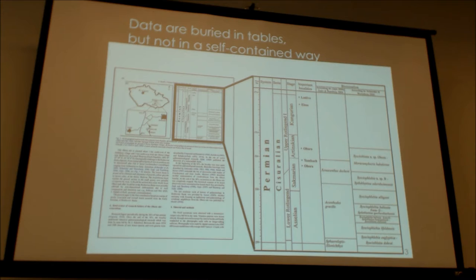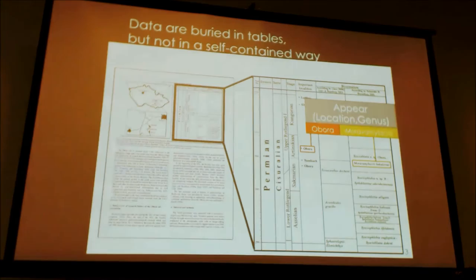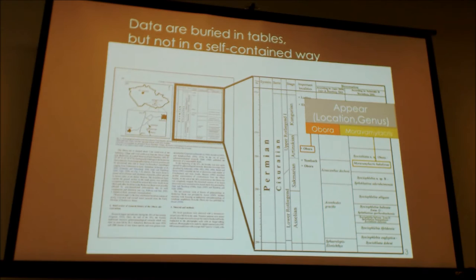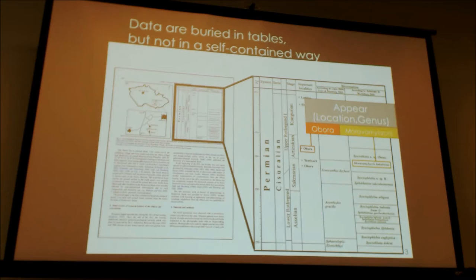Here we see a fact expressed: Obora is a location, and Morovalumocryas — a kind of cockroach — is something found in that location. If you think about figuring out this association, you realize all the layered problems involved: you'd have to do OCR, understand that relationships are expressed visually on the page, deal with strange-looking scientific words, and put it all together. Even if you manage that, there's another problem.